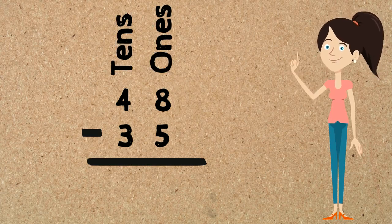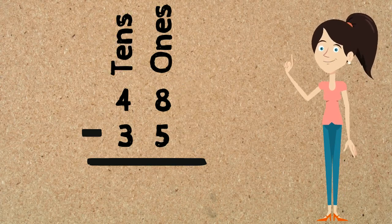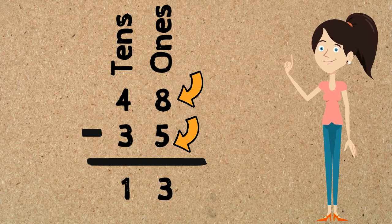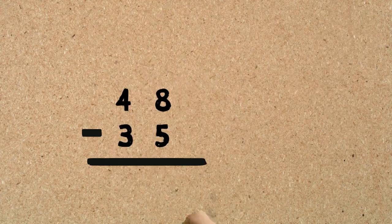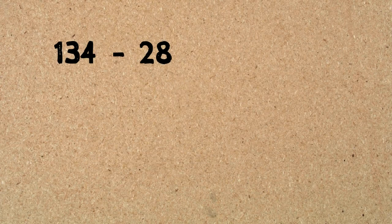To start subtracting, just like in addition, we always start with the ones column and then make our way to the tens. We always subtract the bottom number from the top. So we start with 8 take away 5 equals 3, then 4 take away 3 equals 1. So we can say 48 take away 35 equals 13, or the difference between 48 and 35 is 13.